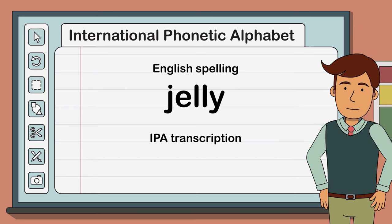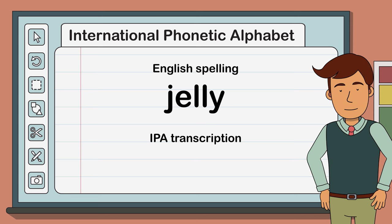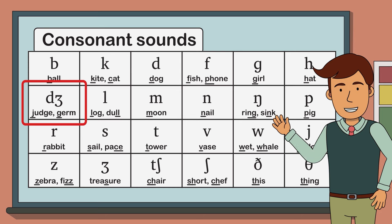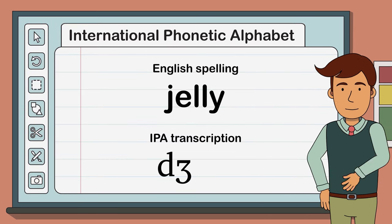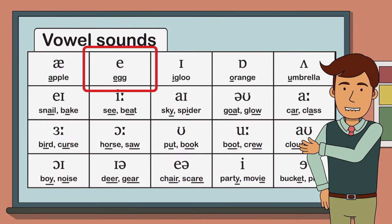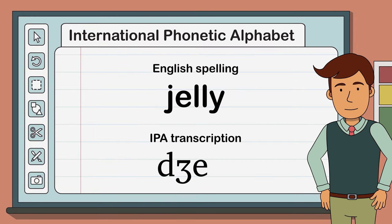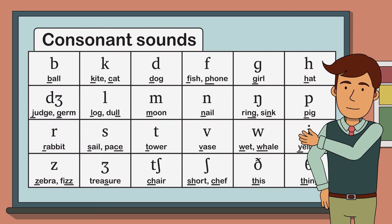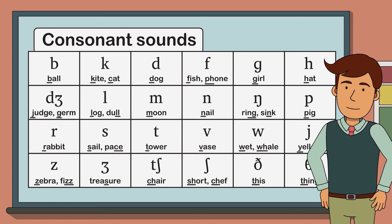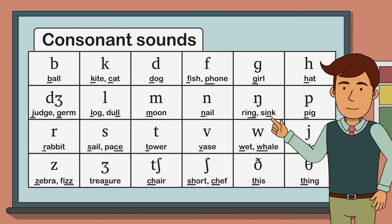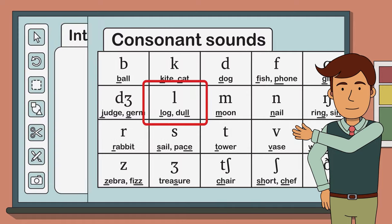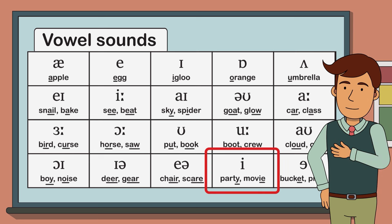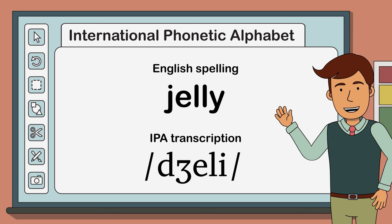That's four sounds: J, E, L, and E. The J sound is represented by this symbol that looks a bit like D3, from the word 'judge.' The E sound in IPA is represented by a standard E, from the word 'egg.' The L sound is a bit trickier — even though we use two Ls in our English spelling, we only use one symbol in IPA because there's only one sound. Remember, one sound, one symbol. So in this case we simply use a lowercase L. Finally, the E sound, often found on the end of words, is represented by an I. And that's it — the word 'jelly,' written in IPA.